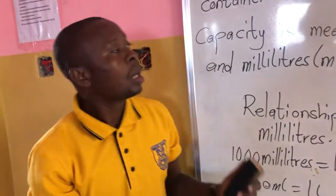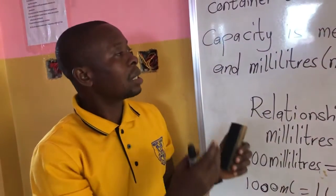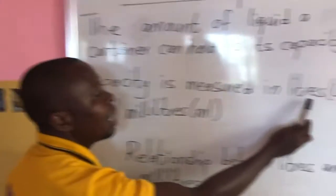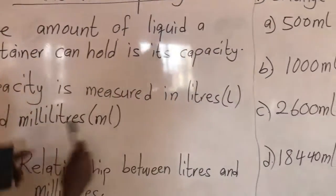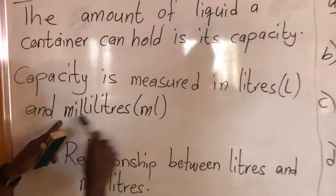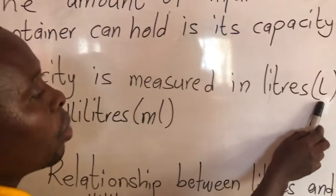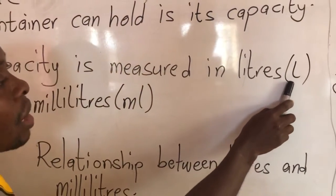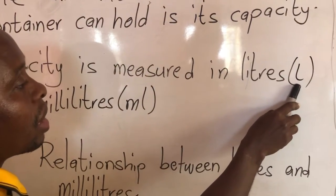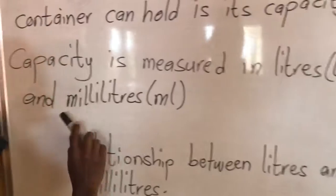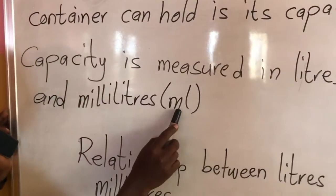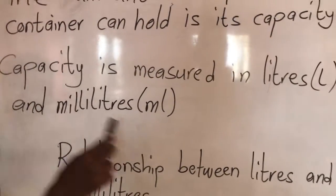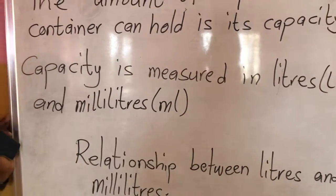Capacity or volume is measured in either liters or milliliters. Liters is represented by L, and milliliters by ml.